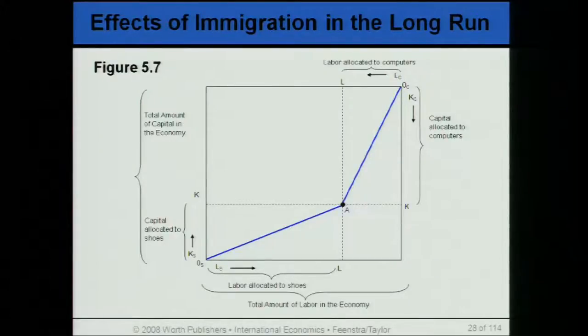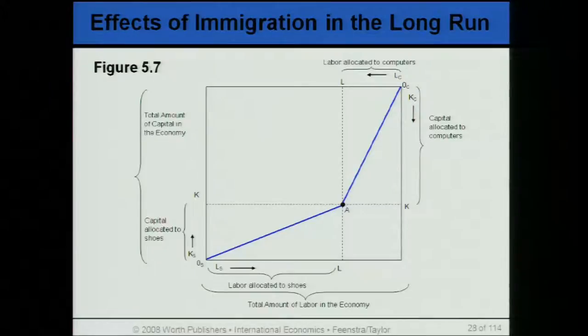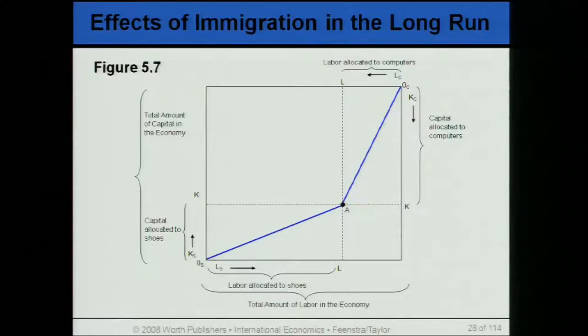Coming to the effects of immigration in the long run, we will resort to the Rybczynski theorem. The Rybczynski theorem can best explain the possible impact of immigration in the long run. Recall that the Rybczynski theorem states that an increase in supply of a factor — keeping product prices constant, and when you assume product prices to be constant, you further assume that the relative wage rates are the same and the capital-labor ratio eventually is the same — increases the output of the commodity which uses the expanding factor intensively.